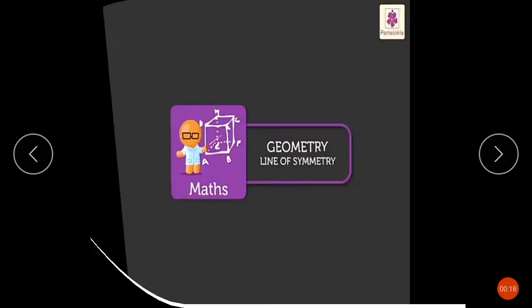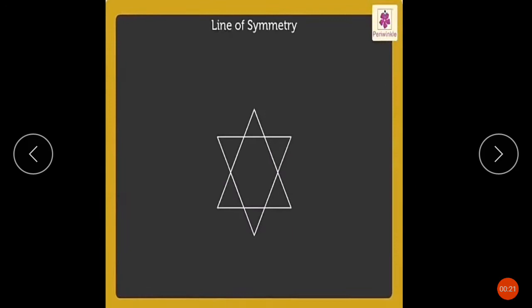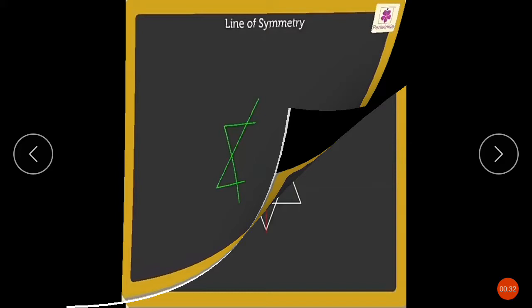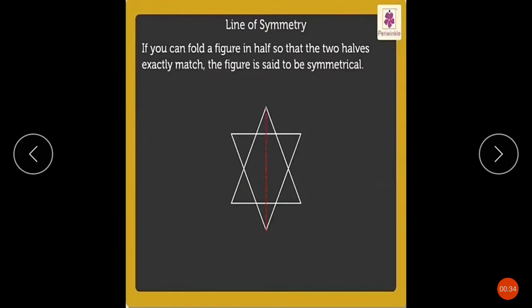Let's start. Look at the Star of David here. Now let's fold this figure in half. You will notice that both halves match each other exactly. کہ بالکل ایک دوسرے کے ساتھ exact match ہو گیا.